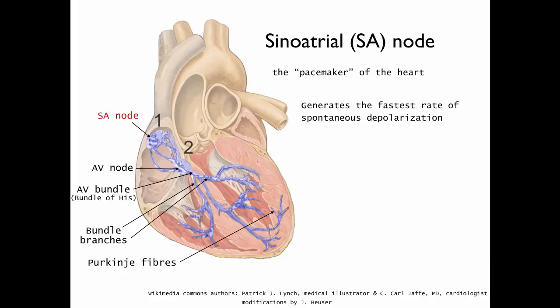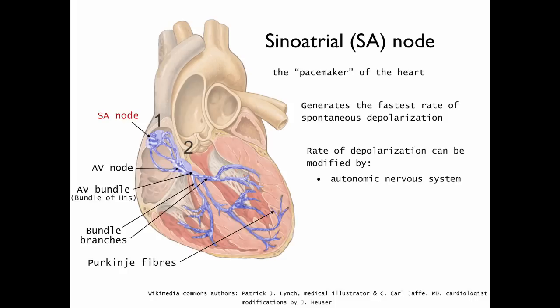We call the SA node the pacemaker of the heart because it generates the fastest rate of spontaneous depolarization. The AV node, AV bundle, bundle branches, and Purkinje fibers can also spontaneously depolarize, but they don't depolarize as fast as the SA node — hence it sets the pace of the heart. The rate of depolarization of cells within the SA node can be modified by the autonomic nervous system as well as hormones such as epinephrine.